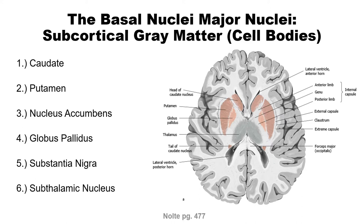Starting at the upper left-hand corner, we can see the head of the caudate nucleus. Looking further down, that's the tail of the caudate nucleus. Note the lateral ventricles — that space right by those structures. What you're looking at is like a C shape; when you cut through, you'd only see the fingertips and a bit of the base of the palm, not the whole rest of that C shape.